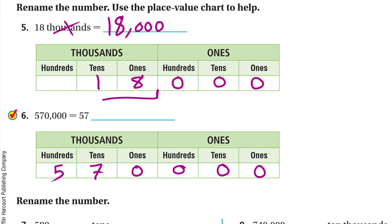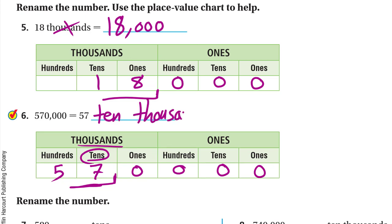For 570,000, find how many ten-thousands that is. Write 570,000 on the place value chart and identify where 57 sits — it stops at the ten-thousands column, so it's 57 ten-thousands. Remember: three zeros means one thousand; four zeros means ten-thousands.